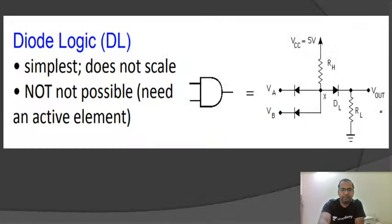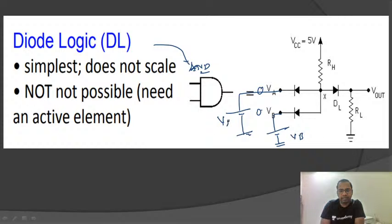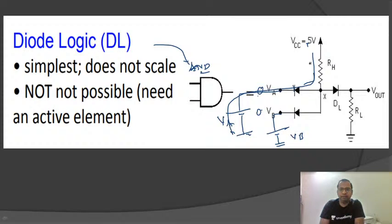Coming to diode logic: the basic gate is the AND gate. In the circuit, if we give zero and zero as inputs, both diodes are connected to ground with a VCC supply. The positive five volts goes to the P-type and zero goes to the N-type, so both diodes come into conduction, current flows, and we get output as zero for the zero-zero input case.